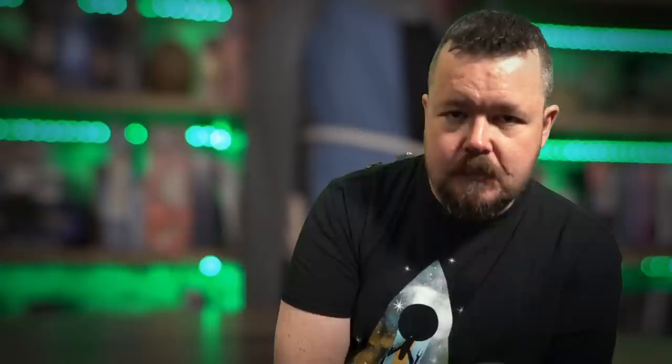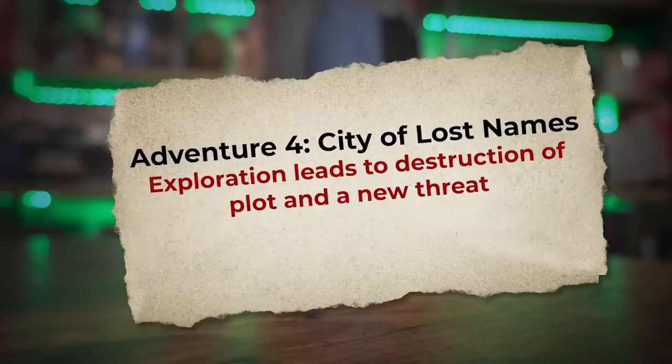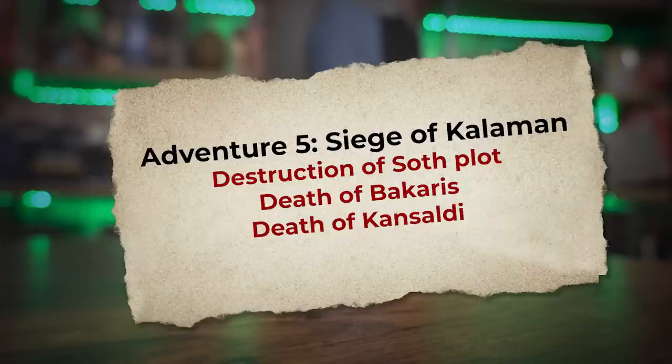Number three, 'The Northern Wastes': the PCs go looking for clues and find the city and an army. Number four, 'City of Lost Names': the city they were looking for — exploration leads to destruction of a plot and a new threat. Number five, 'Siege of Kalaman': destruction of Lord Soth and battle with Cansaldi. Now if that sounds off — wait, who's Cansaldi? Where did she come from, and why do we care? Where we'd normally expect a mid-plot twist, what they've done is introduced a subplot instead.